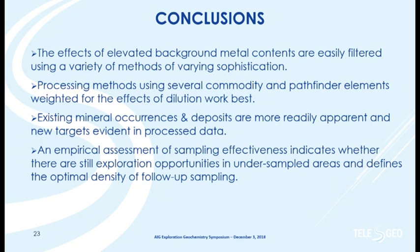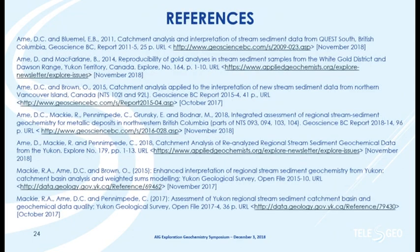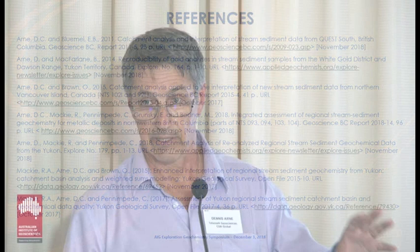To conclude: it's straightforward to correct for interfering geochemistry in stream sediment data, and using several commodities or pathfinder elements and correcting for dilution works best. You can see existing deposits much better and generate new targets. You can also empirically assess the data to decide the optimal sample spacing or catchment area to optimize your survey — you don't want to oversample, but you don't want to undersample either. All this work is available online from Geoscience BC.